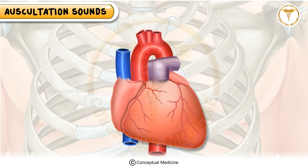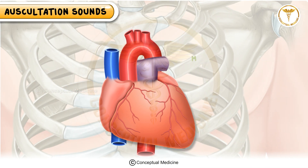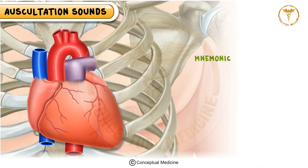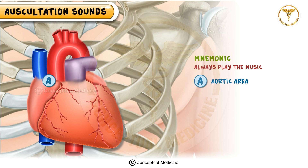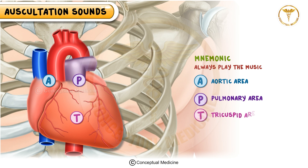To easily remember these locations, use the mnemonic 'Always Play The Music': A for aortic area, P for pulmonary area, T for tricuspid area, M for mitral area.